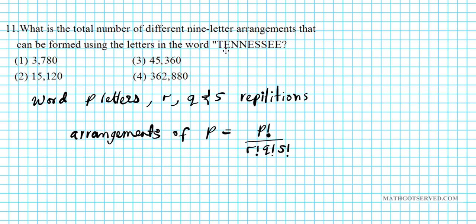With Tennessee, we want to find the total number of letters and then divide by the factorial of the letters that repeat. Tennessee has nine letters in all, so we're going to have 9 factorial on top — nine letters total.